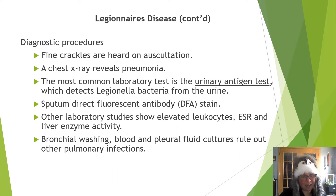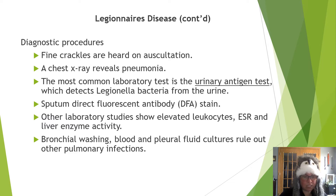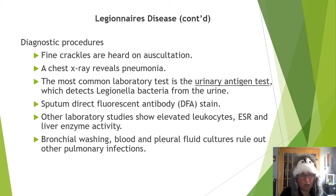Legionnaires' disease is diagnosed by hearing fine crackles at auscultation and with a chest x-ray that reveals pneumonia. The most common lab test is a urine antigen test detecting Legionella bacteria from urine. Sputum is collected and a direct fluorescent antibody test is performed. Other lab studies show elevated leukocytes, ESR — erythrocyte sedimentation rate — liver enzyme activity, and bronchial washings, blood, and pleural fluid are cultured to rule out other potential pulmonary infections.